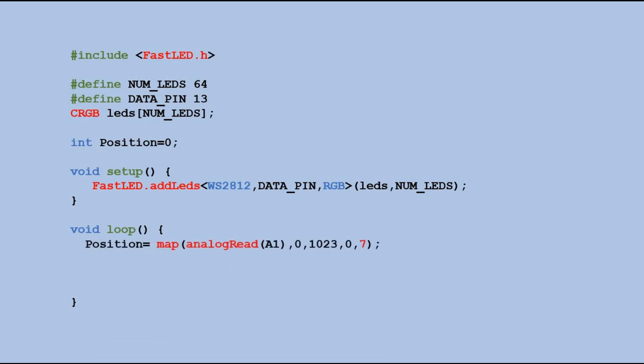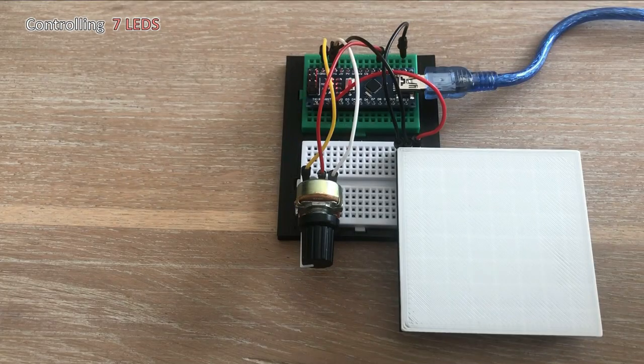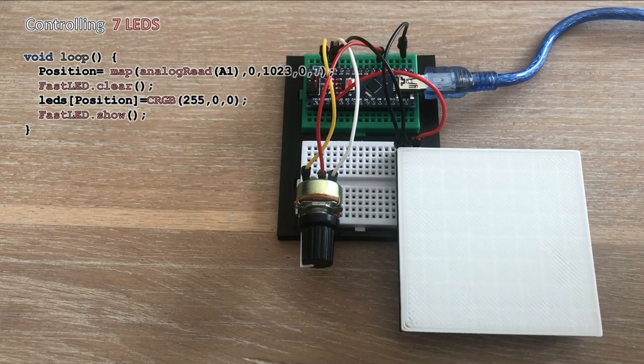So in loop we read the value from the pot and map it to the range from 0 to 7 which represents LEDs in the top row and save the mapped value to position variable. Then with clear command we are turning all LEDs off and then assign green color to the LED position variable is pointing to. Show command displays all the changes on the LED matrix. Let's see how this works.